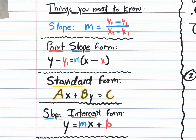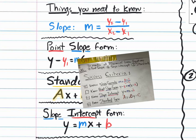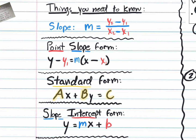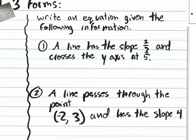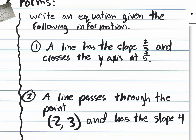Once you have all of this memorized, or at least comfortable with it, you'll be able to answer questions like these. Copy these examples down in your notebooks. Write an equation given the following information: first, a line has a slope of two-thirds and crosses the y-axis at five; second, a line passes through the point (negative 2, 3) and has a slope of four.